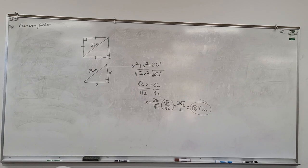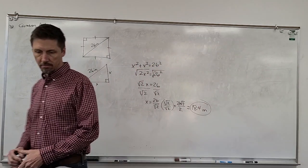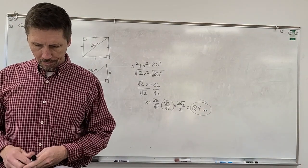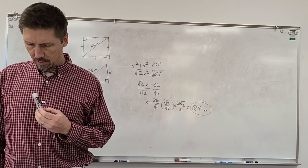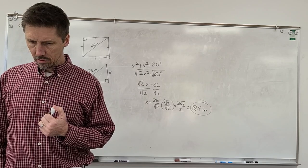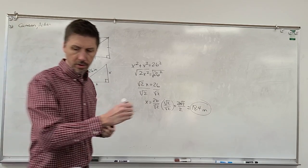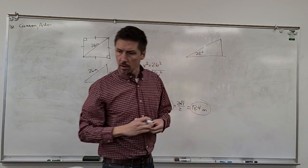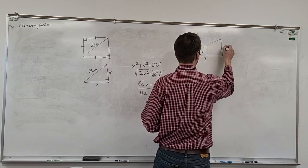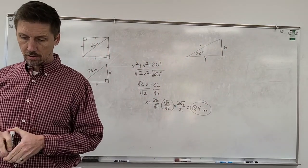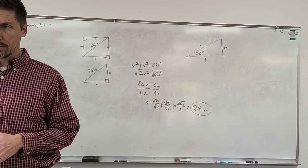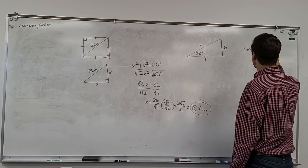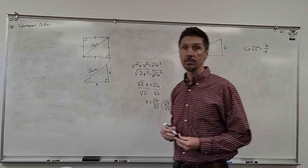Any other questions? Yes — section 9.5 problem 33. It wasn't that confusing, just one part. It was just the part where I got to — so 22 degrees. XY6. I got to: sine 22 equals 6 over X. Okay, that's right. So she said sine of 22 degrees equals 6 over X. Does everybody know how she was able to say that?